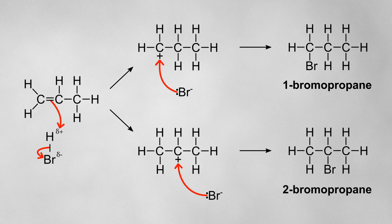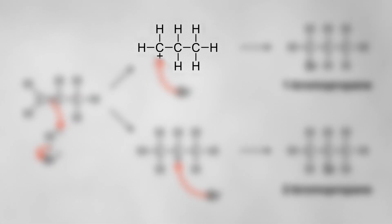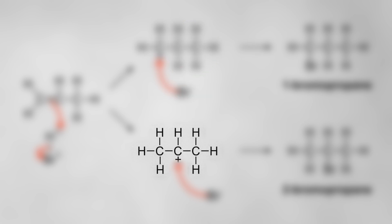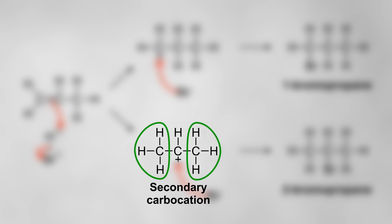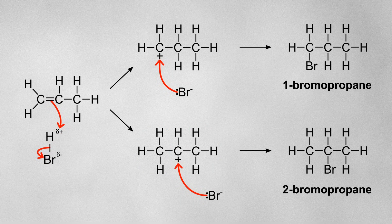In reality, both of these products will form, but one is more likely to form than the other. The way to tell which product is more likely to form is by looking at the two carbocation intermediates. This one is known as a primary carbocation because the positively charged carbon atom is only bonded to a single alkyl group, whereas this one is known as a secondary carbocation because the positively charged carbon atom is bonded to two different alkyl groups. Alkyl groups are electron donating, meaning they'll push electrons towards the positively charged carbon atom. The more alkyl groups there are, the more electrons are being pushed, and therefore the more the positive charge is stabilized.